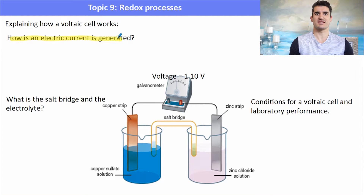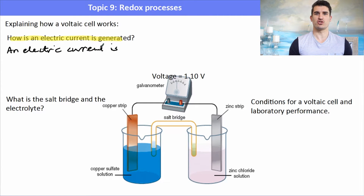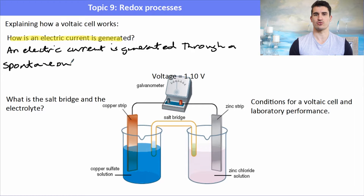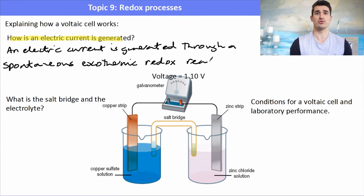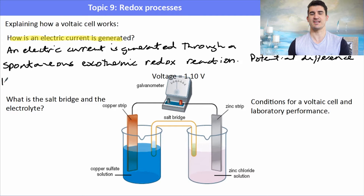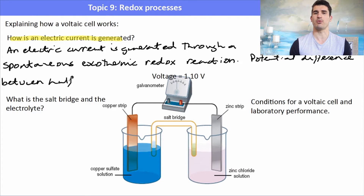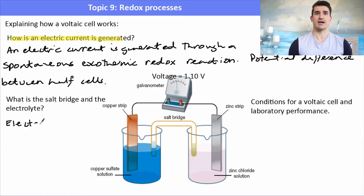Once we connect the two half cells with the salt bridge and electrical wires, an electric current begins to flow due to what we call an electromotive force (EMF). An EMF arises because of a potential difference between the two electrodes — one half cell wants to lose electrons while the other wants to gain them. The potential difference between the zinc and copper electrodes produces a voltage of about 1.1 volts; a smaller potential difference would produce a smaller voltage, and a larger one a bigger voltage.